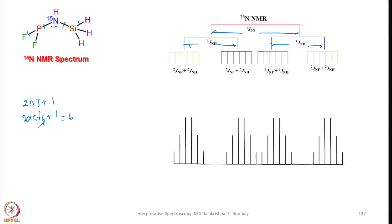I have left the 1H NMR for you to try. Sketch the NMR spectrum by writing the coupling constant tree, a splitting tree, and see how it looks. You can take hints about the coupling constants from these 3 spectral data.